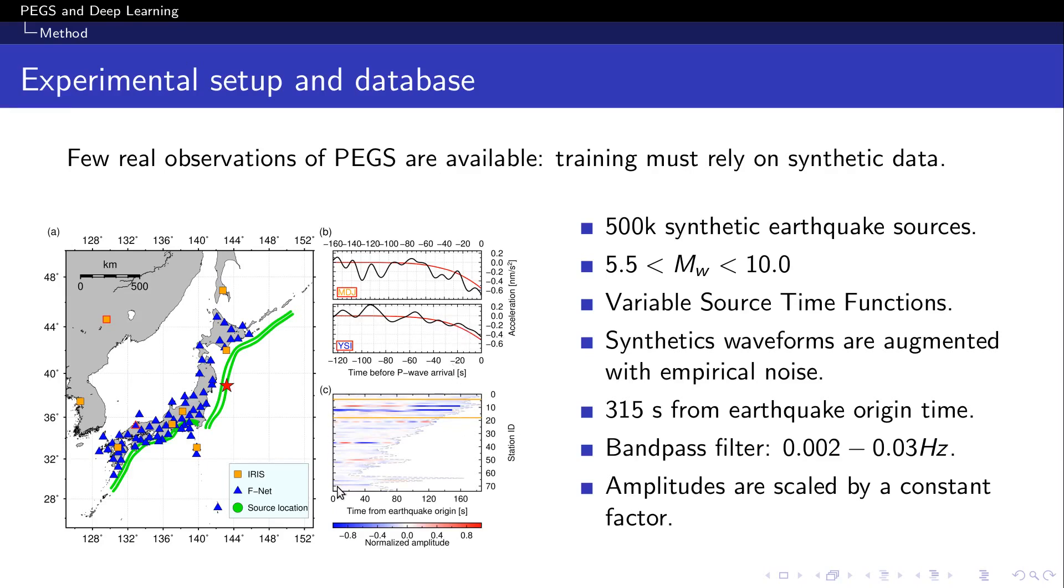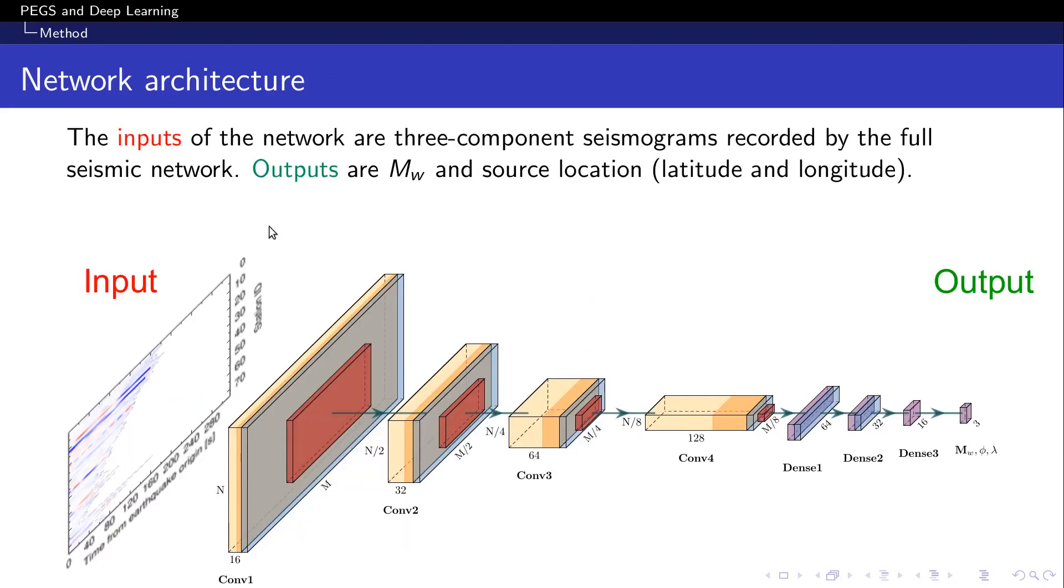So the red line is the synthetic noise-free PEGS waveform, and the black line is the same with empirical noise added. Then we arrange all the waveforms at each station in an image like this one, which has a length of 350 seconds from the earthquake origin time. Here I just cut for display purposes. And we set to zero the trace after the P-wave arrival time, so in this way we would be able to focus only on the information contained in the PEGS, just before the P-wave arrival time.